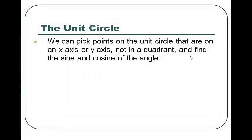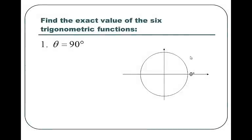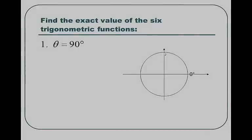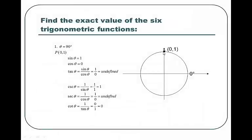We can pick points on the unit circle that are on the x and y axes — quadrantal angles — and find the sine and cosine of those angles. For instance, 90 degrees is at coordinate 0, 1. So sine of 90 degrees is 1 and cosine of 90 degrees is 0. Tangent is undefined because tangent is sine over cosine, which is 1 divided by 0 — you can't divide by 0. The reciprocal of 1 is 1. The reciprocal of 0 is 1 over 0, which is undefined. Cotangent is the reciprocal of tangent — here it's 0 over 1, which equals 0.